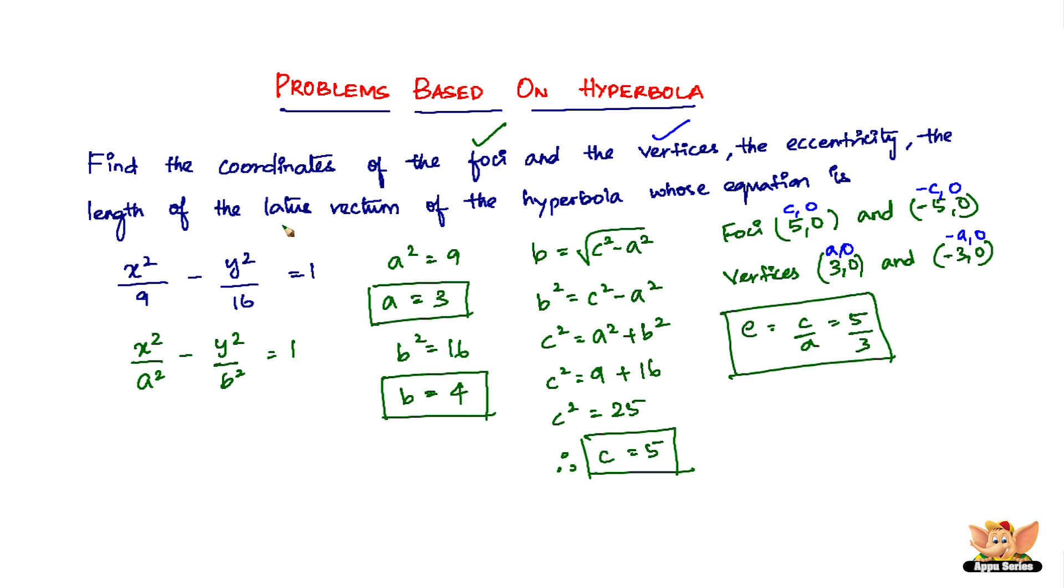And then we have to finally find the length of the latus rectum. The latus rectum is given by 2b squared by a, which is equal to 2 times 16 divided by 3 because b squared is 16 and a is 3. So we have 32 by 3. So 32 by 3 is the length of the latus rectum.